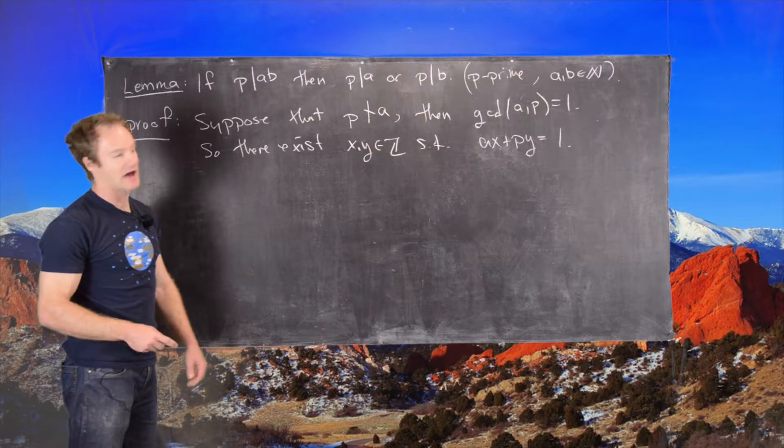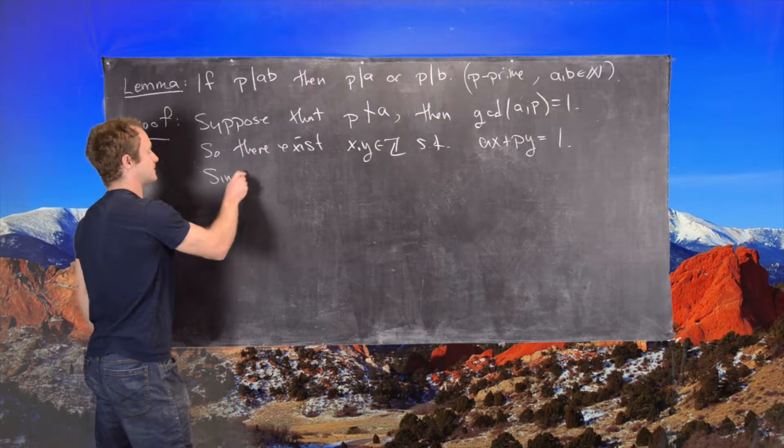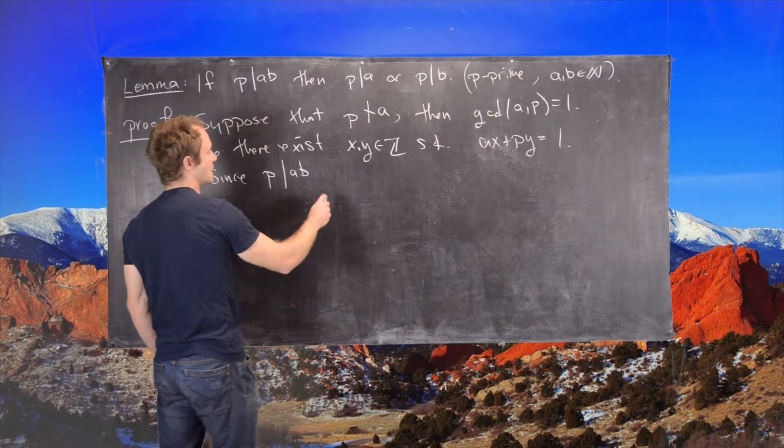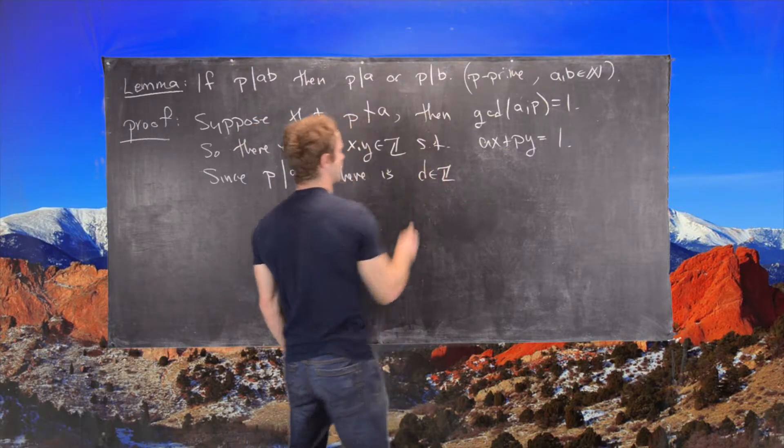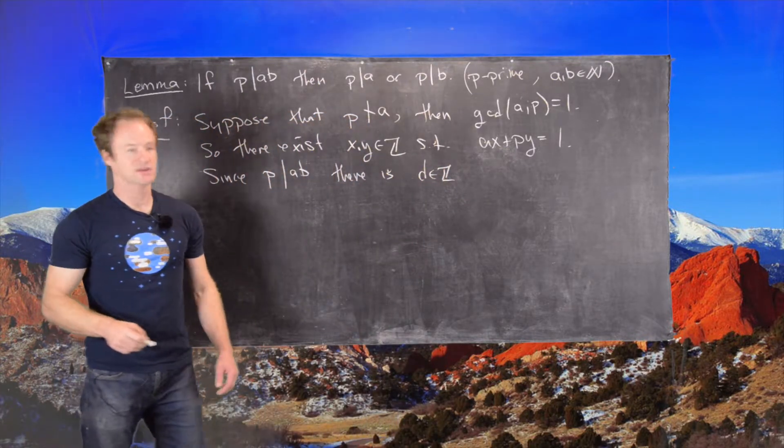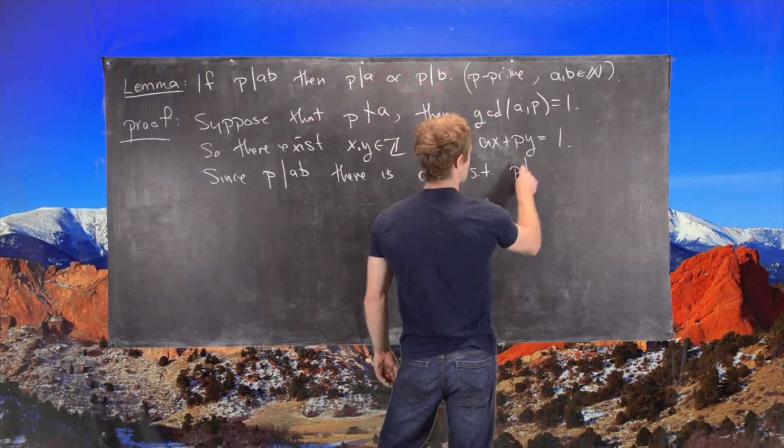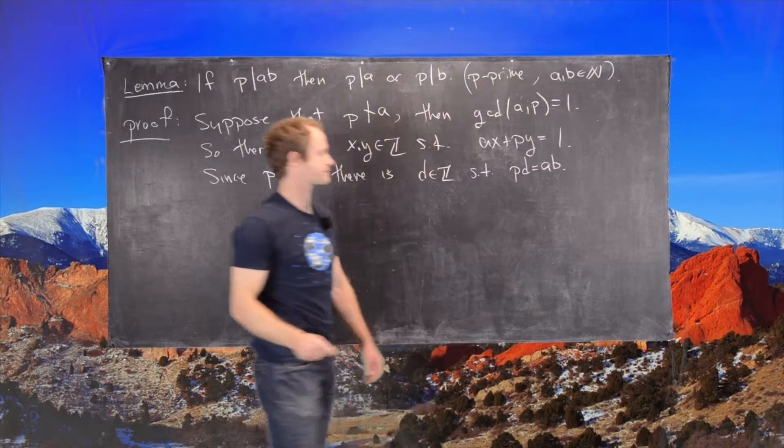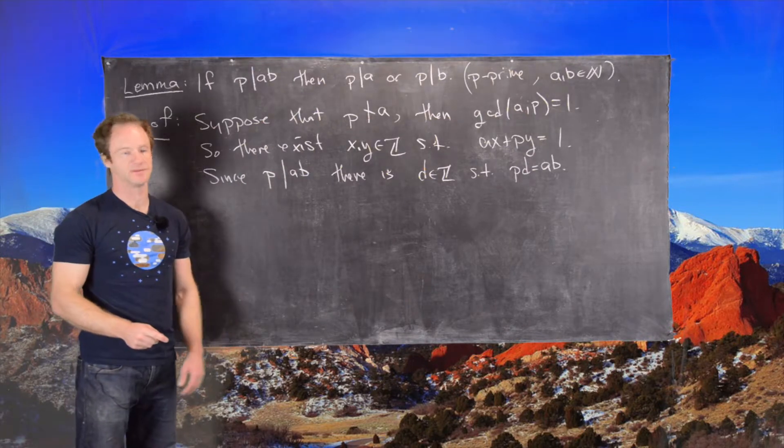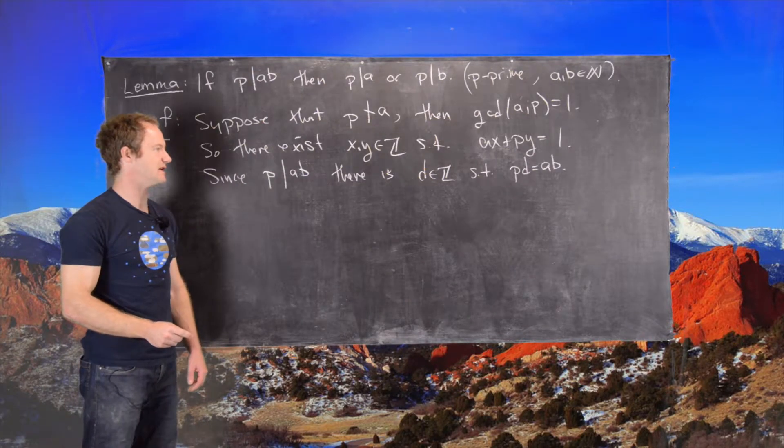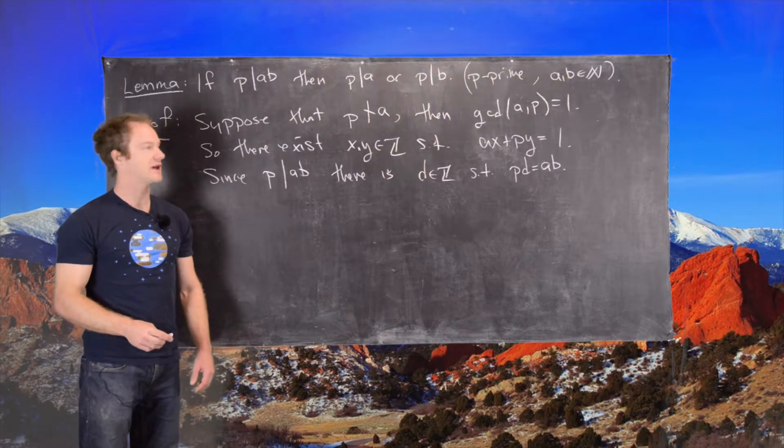Another fact that we have is that P divides AB. Since P divides AB, there is some D, which is an integer, such that P times D equals AB. That's just the definition of divisibility. AB is a multiple of P.